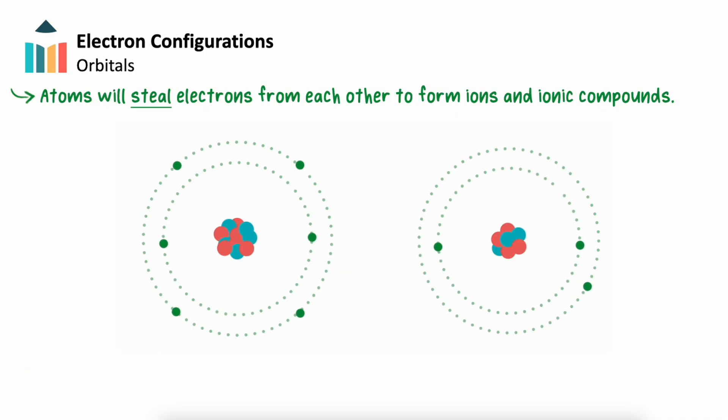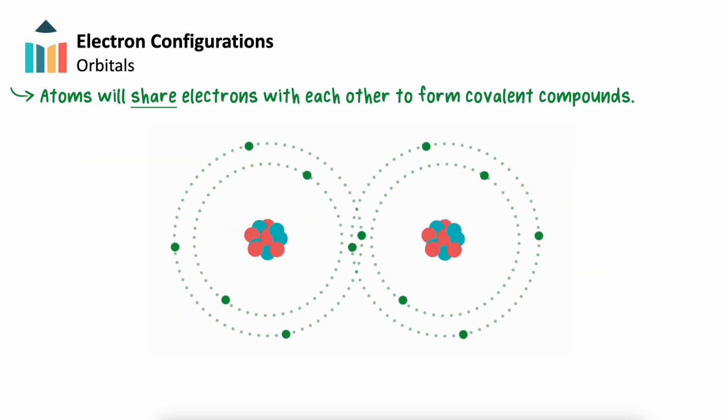For example, atoms can steal electrons from each other, creating ions that stick together and form ionic bonds. Or they can share electrons, creating covalent bonds that fill their outer shell.